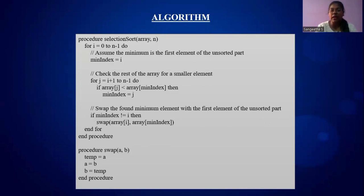For the rest of the array, j equals i plus 1 to n minus 1, we check one condition. If array[j] is less than array[minIndex], then minIndex equals j. If minIndex is not equal to i, then we swap array[i] and array[minIndex]. End for, end procedure.